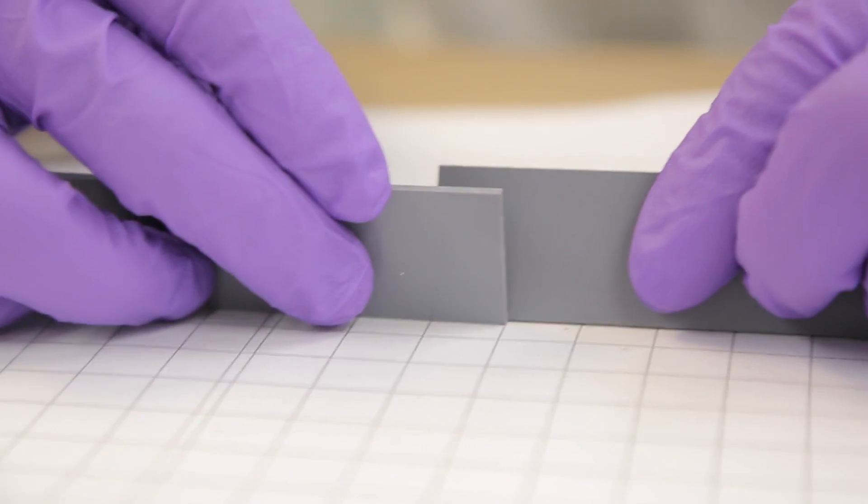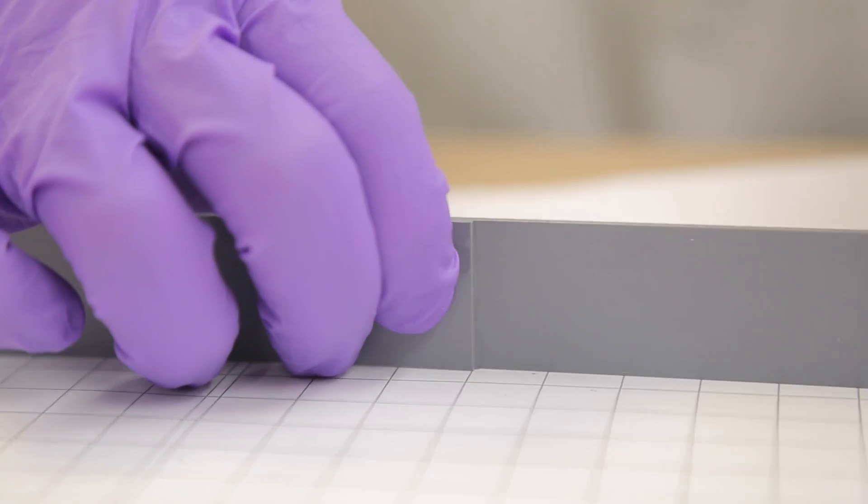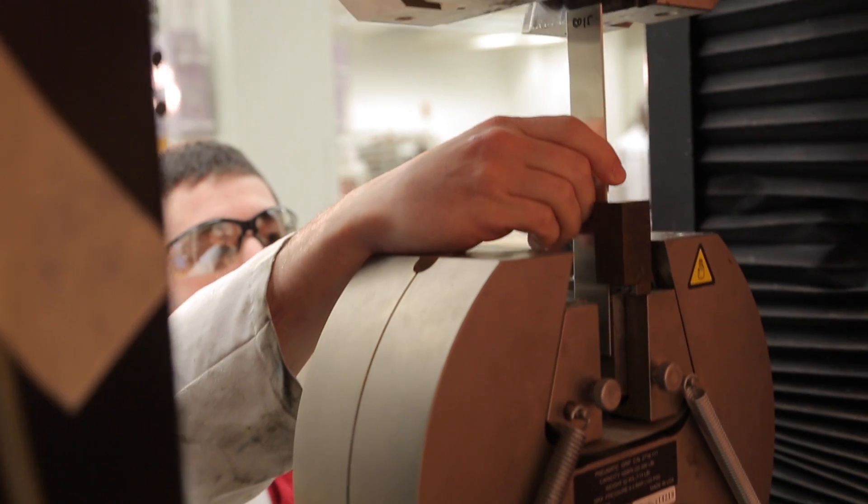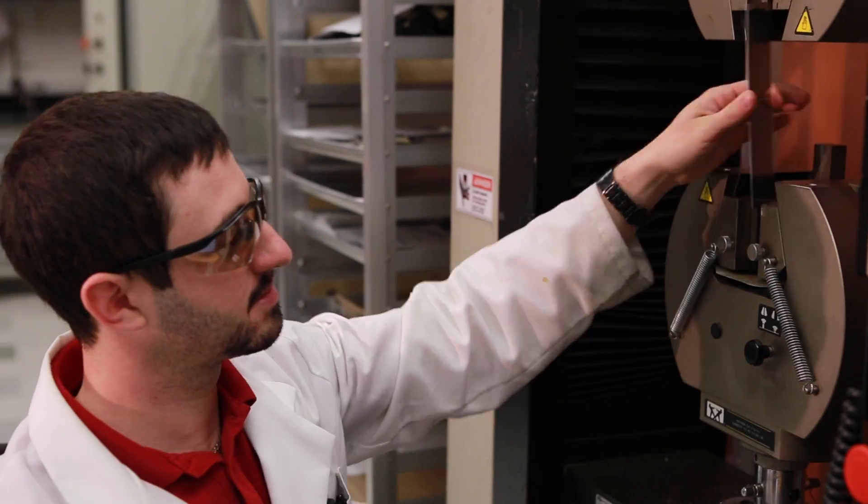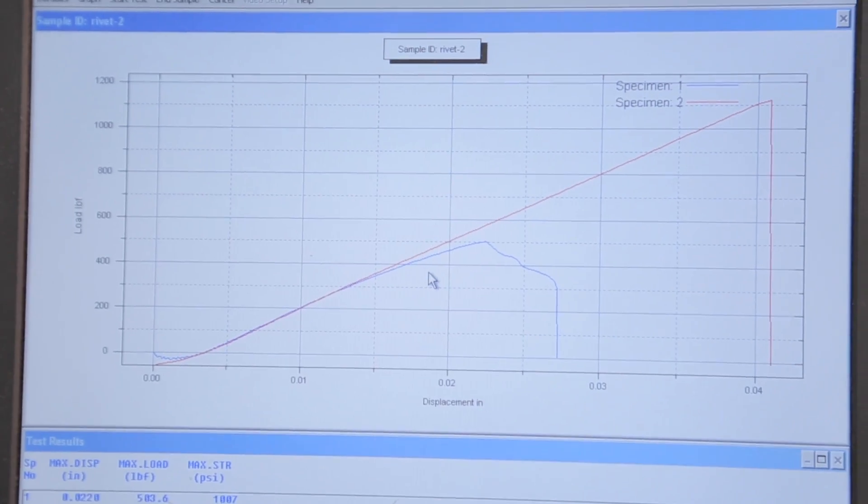One standard method for shear strength testing calls for the bonding of two test specimens overlapped by a specified area. The assembly is secured in a mechanical properties tester and is pulled in shear until failure. We record the load at breakpoint and calculate the corresponding shear stress.